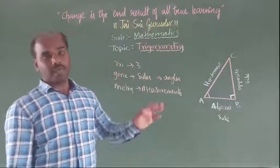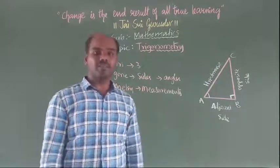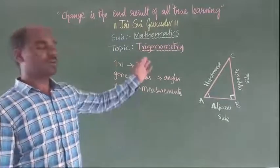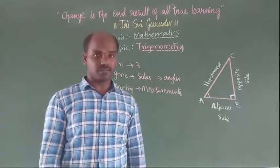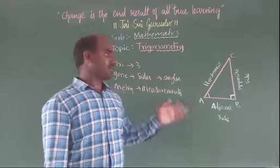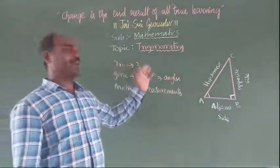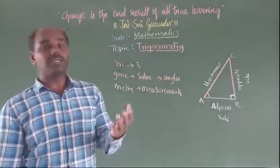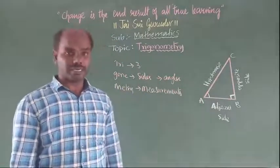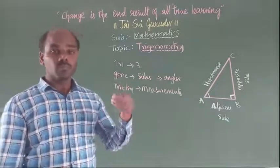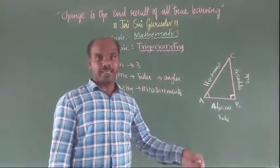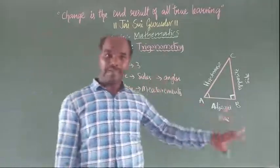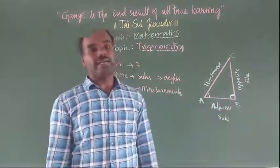The father of trigonometry is Hipparchus. Trigonometry is applied to triangles - we have totally 6 types of triangles. This trigonometry is mainly applied in the right angle triangle.